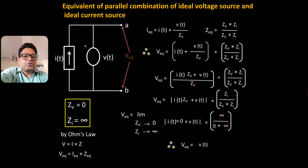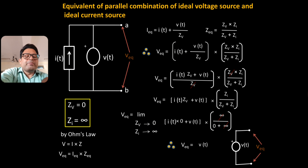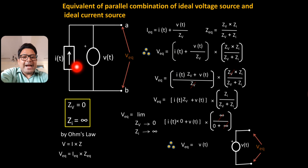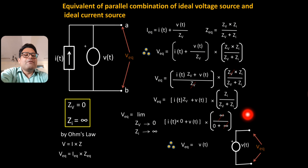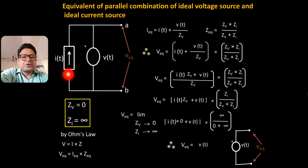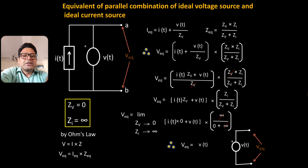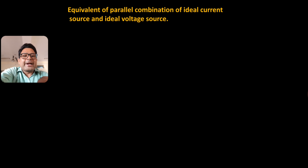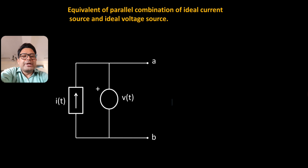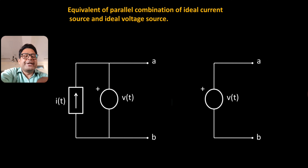So VEQ is equal to only V(T). From this derivation, we conclude that if an ideal current source and an ideal voltage source are connected in parallel, the equivalent voltage is determined solely by the ideal voltage source. This means the ideal current source I(T) can be removed — it is redundant or dummy. The equivalent of the parallel combination is simply the ideal voltage source alone.